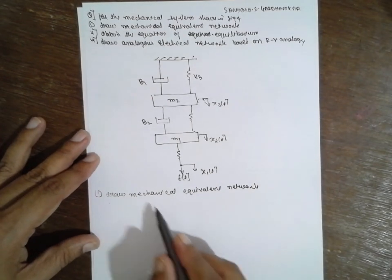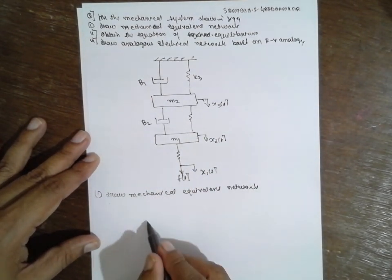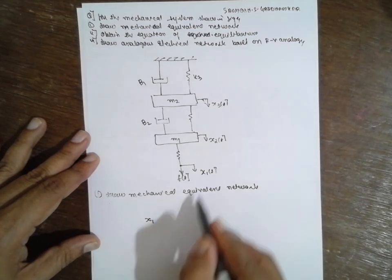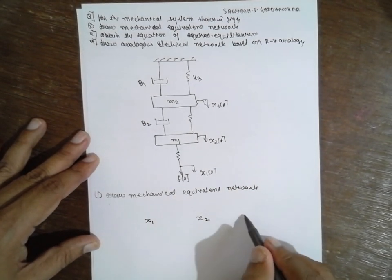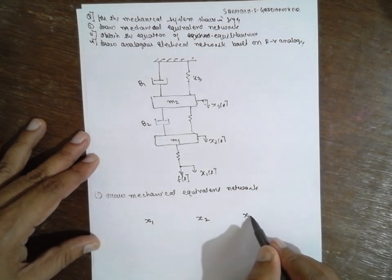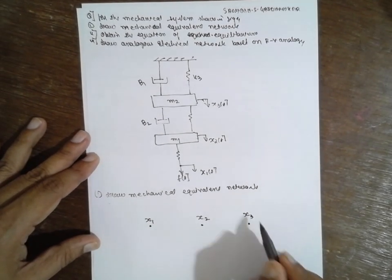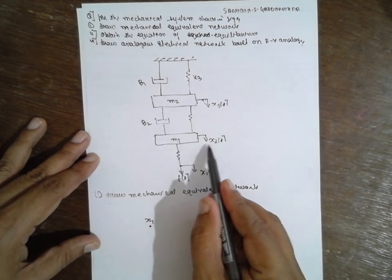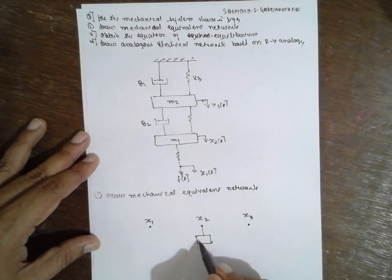First I will consider the nodes. I will write node 1, next node 2, next node 3. These are the nodes I have considered. Now node 1 is connected to the mass M1, and it has to be connected to the ground.